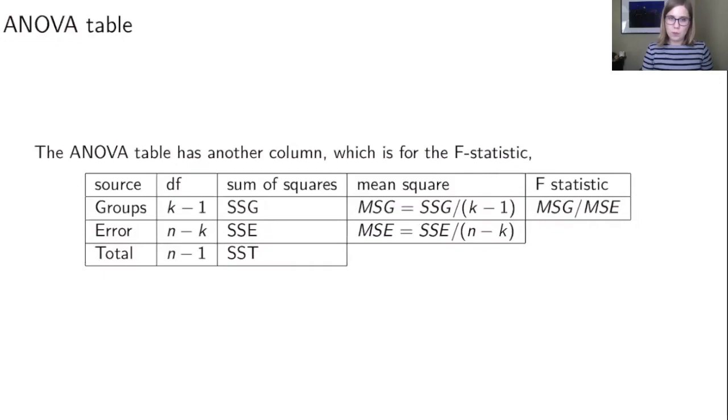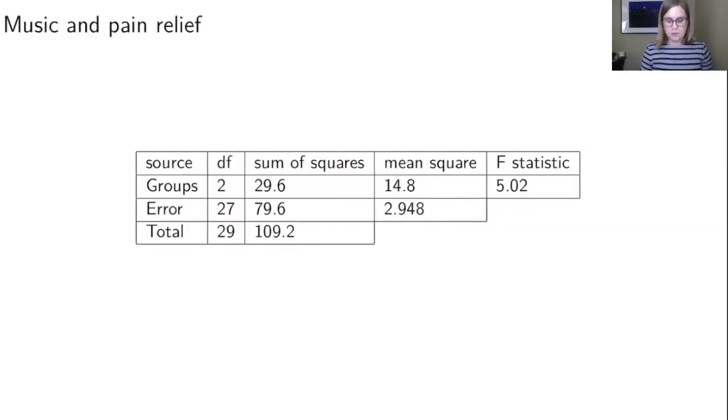So there's one more column in the ANOVA table that's the F statistic and that's where you do MSG divided by MSE. If we were going to do that with our data, I think I'm using the exact sums of squares here but I could do 14.8 divided by 2.948 and that would come out to be 5.02 and that's my F statistic. I think I'm going to leave this video here for right now.